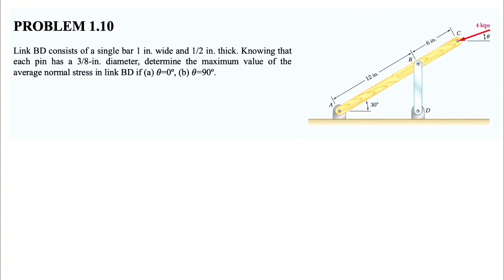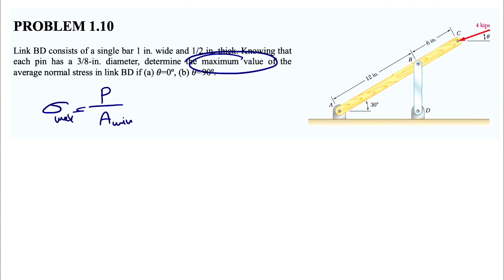We need to find the maximum value of the average normal stress. We know that average normal stress equals force divided by area, and when we have the minimum area we will have the maximum average normal stress.